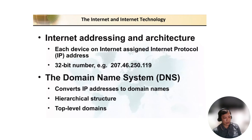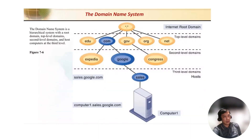The domain name system is like a phone book of the internet; users access information online through domain names. Examples of domain names include sys.google.com and computer1.sys.google.com. The domain system is a hierarchical system with a root domain, top-level domain, second-level domain, and host computer at the third level.